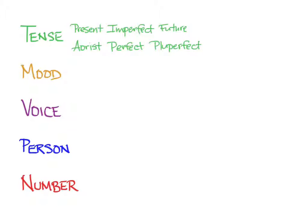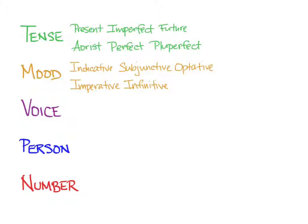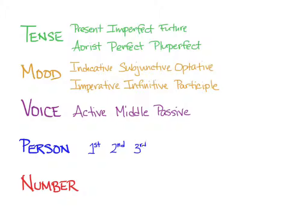You've now met all of those tenses in the indicative mood. Greek also regularly uses the subjunctive mood — our topic in this video — the optative, and the imperative. You've also started learning about infinitives, and participles are in your near future. Greek has three voices: active, the one we've done so far, in which the subject does the action; middle and passive, which we'll learn later. You know all about Greek's first, second, and third person, and Greek has singular, dual, and plural numbers, though dual isn't used very much.